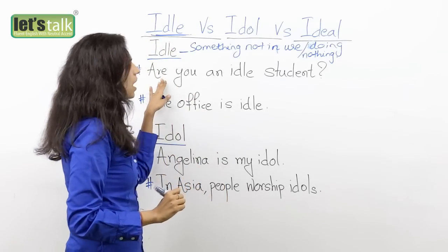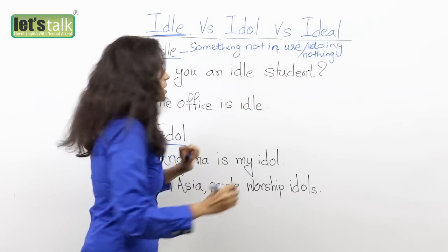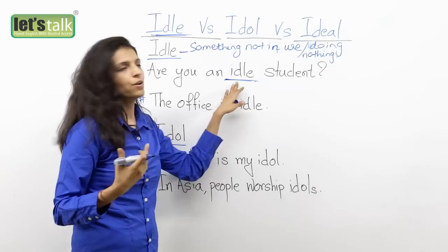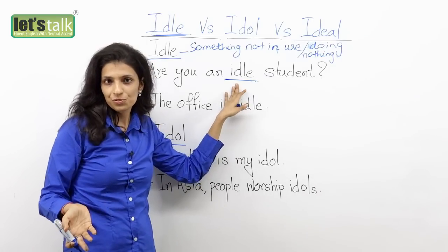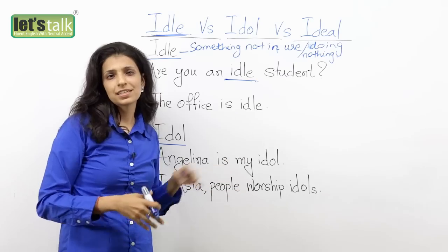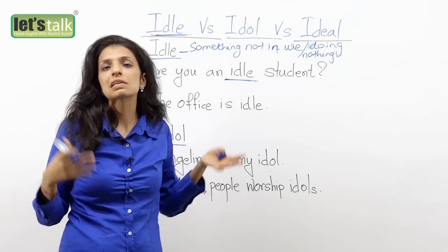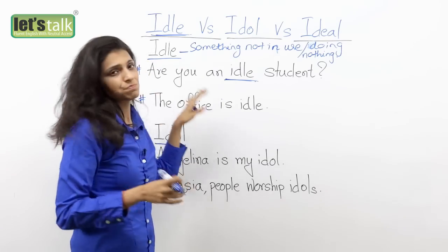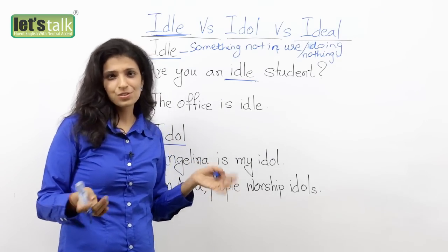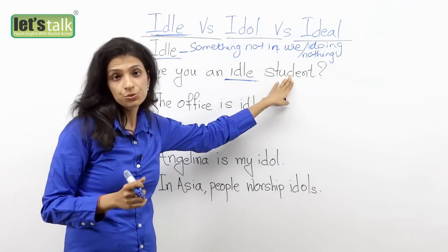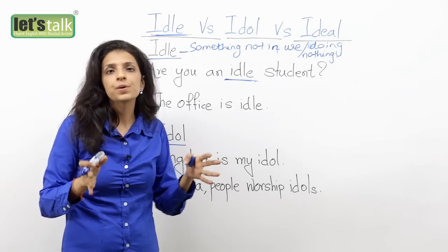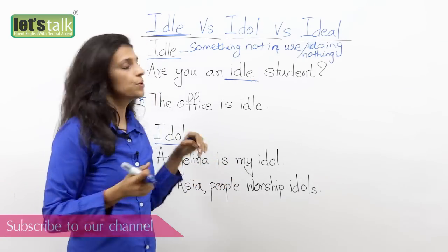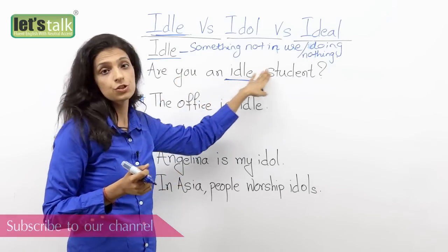So the first sentence: 'Are you an idle student?' Now students have summer holidays where they choose what to do. Sometimes they go on camps, they take up hobby classes, or they just do nothing. So when you want to ask someone 'are you doing nothing?', you say 'Are you an idle student?' That means, are you doing nothing now — basically you're not doing anything.